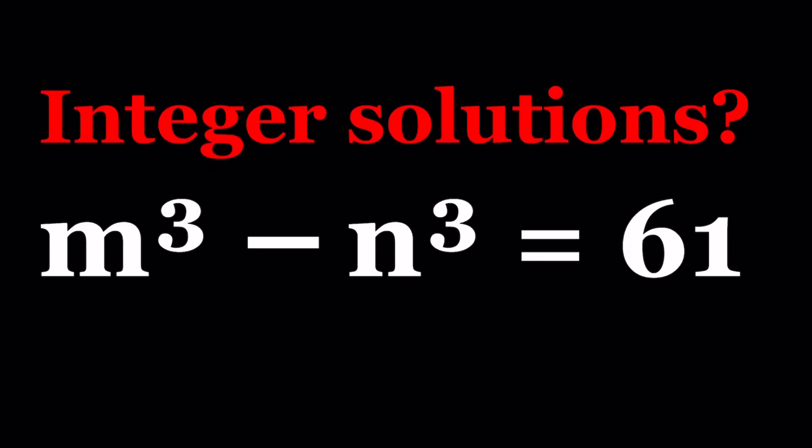Hello everyone. In this video, we're going to be solving a Diophantine equation. We have m cubed minus n cubed equals 61. m and n are integers, and we're trying to solve for m and n.